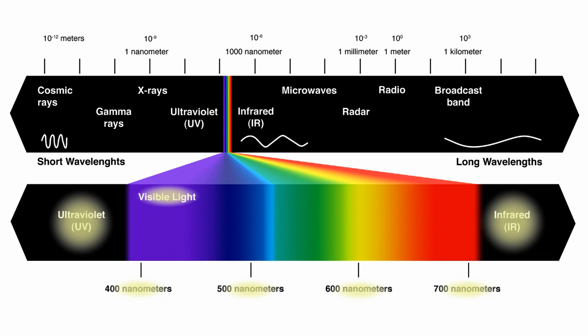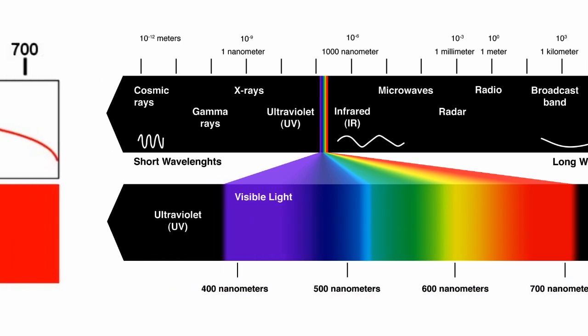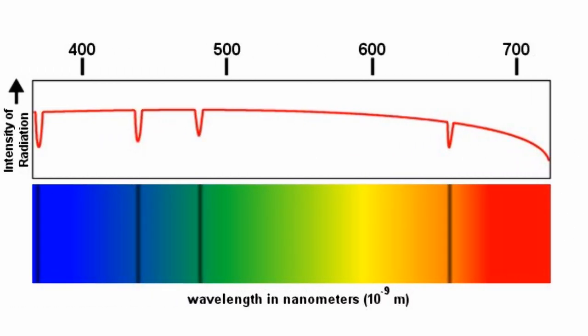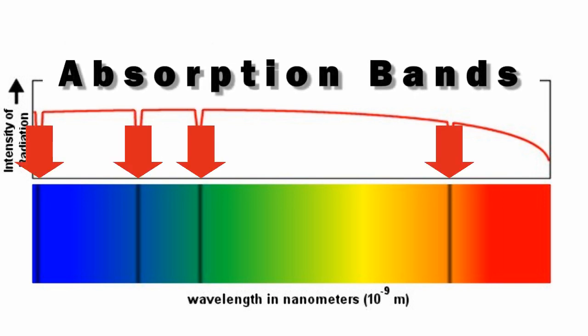This enables scientists to measure the wavelengths that are absorbed. When energy is absorbed, it creates gaps in the Sun's spectrum, which appear as dark bands in the visible part of the spectrum.